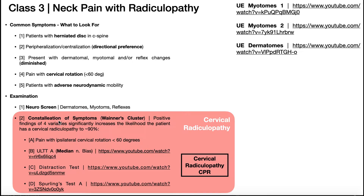In terms of special tests, there's this constellation of symptoms called Wainner's cluster. You have four tests, one of which we've already discussed: pain with ipsilateral cervical rotation at less than 60 degrees. If you have a positive finding for all four of these, it significantly increases the likelihood that the patient has a cervical radiculopathy — up to about 90%, which is pretty good.